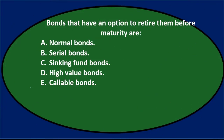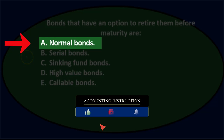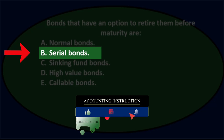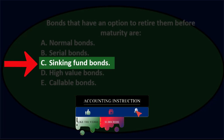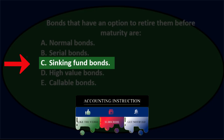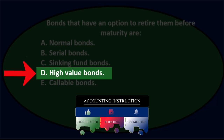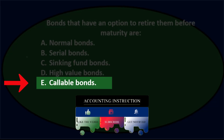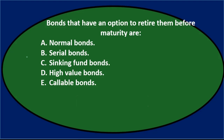Next question: bonds that have an option to retire them before maturity are — A) normal bonds, B) serial bonds, C) sinking fund bonds, D) high value bonds, or E) callable bonds. Let's go through this using the process of elimination.